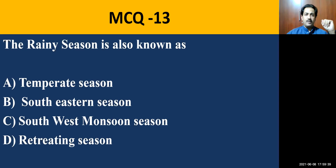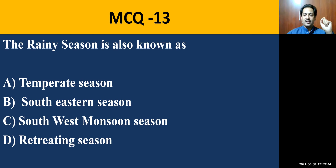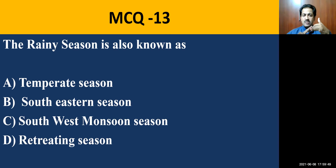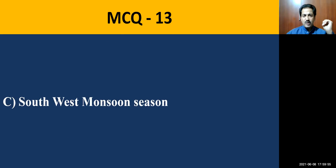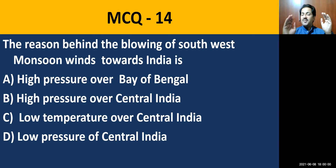MCQ question number thirteen: the rainy season is also known as — options include temperate season, southeastern season, southwest monsoon season, or retreating. The question is very simple and easy. Southwest monsoon season is the correct option.